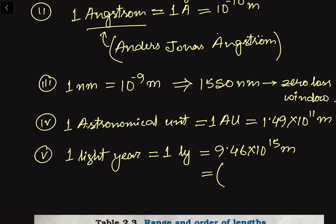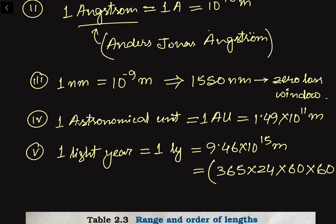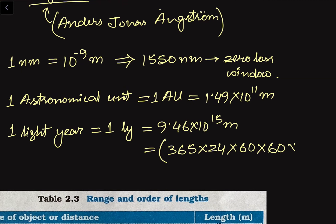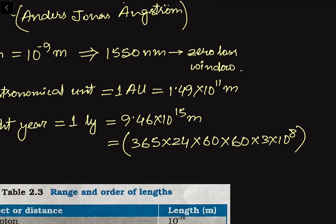To calculate one light year, we multiply the speed of light by the number of seconds in a year: 365 days × 24 hours × 60 minutes × 60 seconds, then multiply by 3 × 10 to the power 8 meters per second. This gives the value 9.46 × 10 to the power 15 meters.